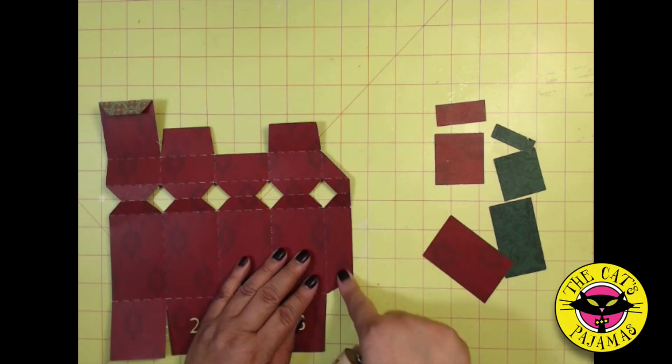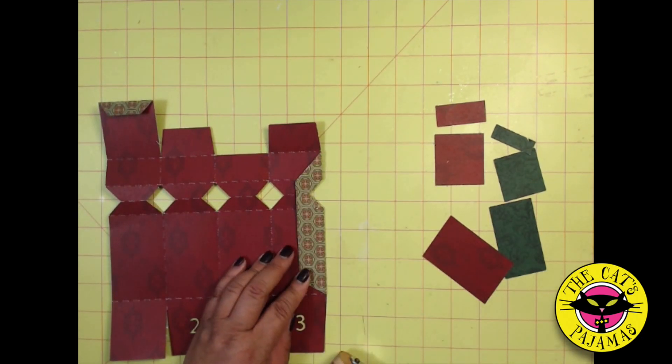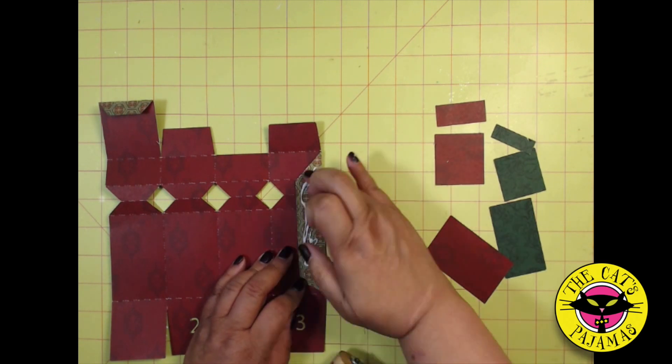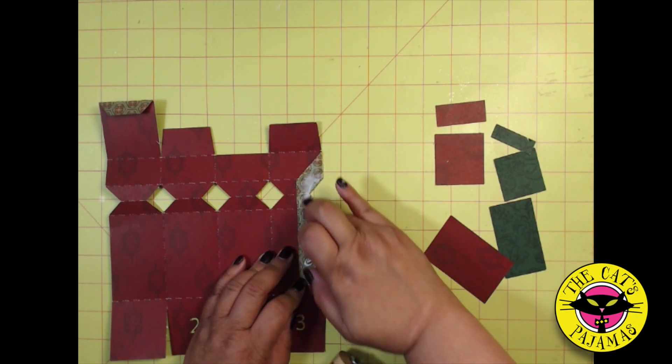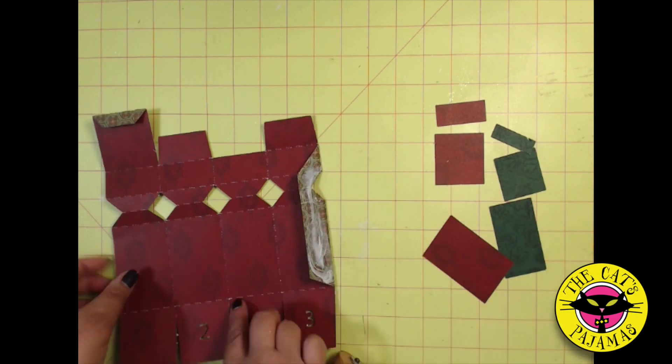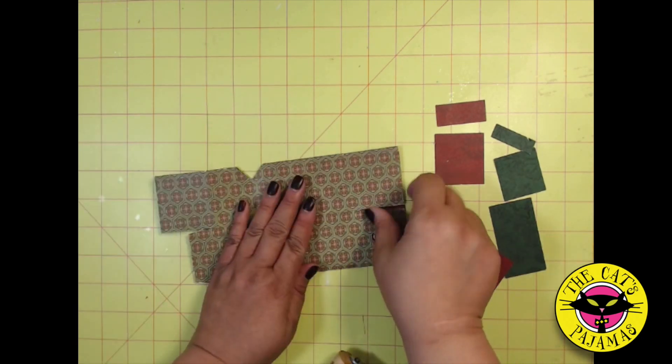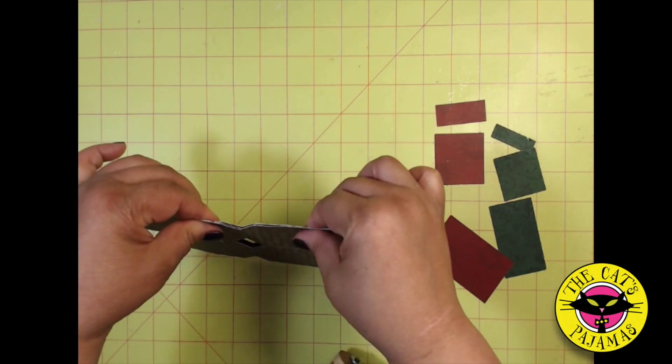Now fold the tab that's on the right hand side over and add glue. Spread the glue out to the edges and then fold the box in half right onto the glue tab.